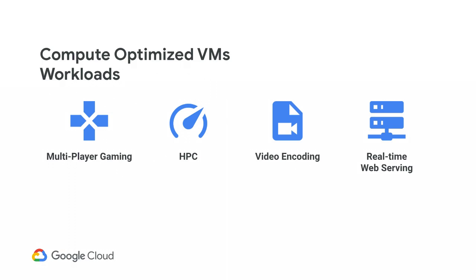To summarize what we covered for compute-optimized VMs: they have the highest performance per core available on Google Compute Engine, powered by the latest Intel second-generation Scalable processors going up to 3.8 GHz in all-core turbo. They have minimal variability and very high consistency, and offer multiple shapes so you can find the one that fits your workload. This makes them a great fit for multiple applications including multiplayer gaming, high-performance computing, video encoding, real-time web serving, and others.